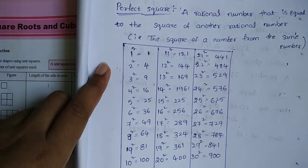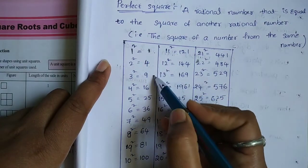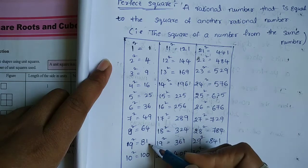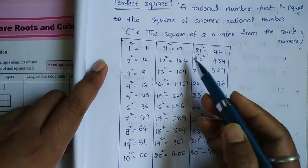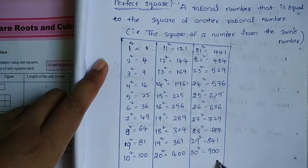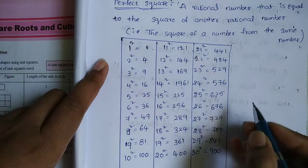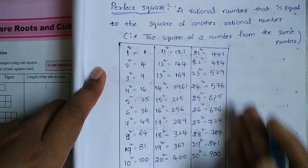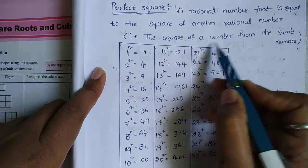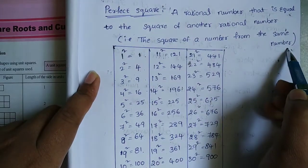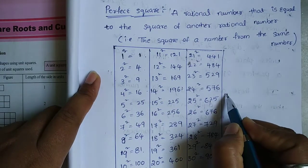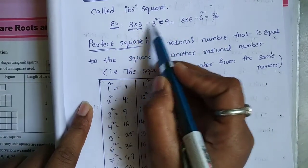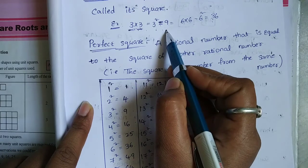We are going to write up to 30 times. Here: 1, 4, 9, 16, 25, 36, 49, 64, 81, 100, 121. I will write up to 900. These numbers are perfect squares. 3 times 3 is equal to 9, so 9 is a perfect square.